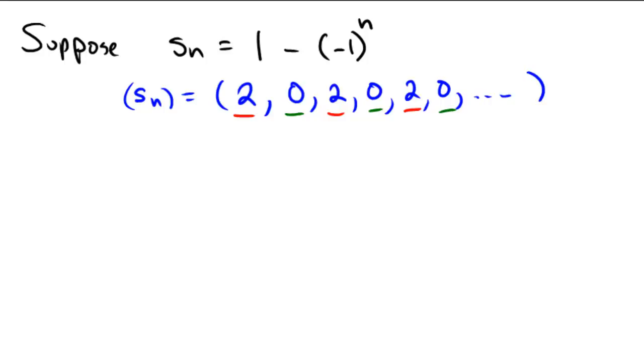So, there's a sub-sequence which has a constant sequence of 2, and a sub-sequence that is a constant sequence of 0. So, S, the set of all sub-sequential limits, there's a sub-sequence that limits towards 0, and there's a sub-sequence that limits towards 2.